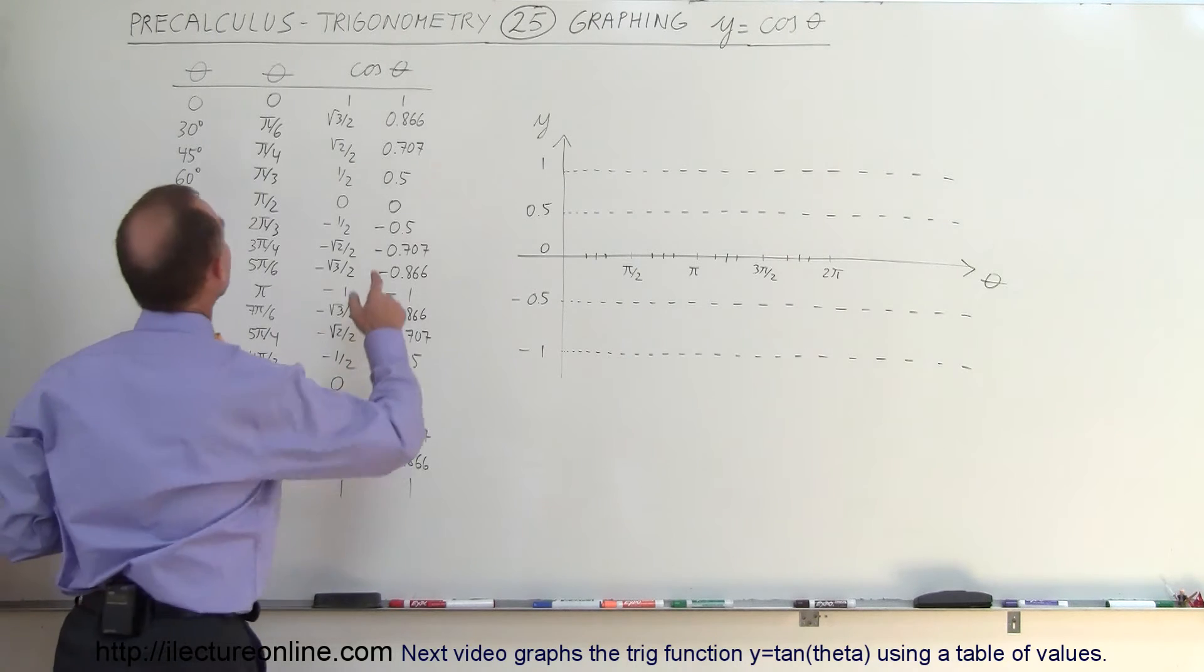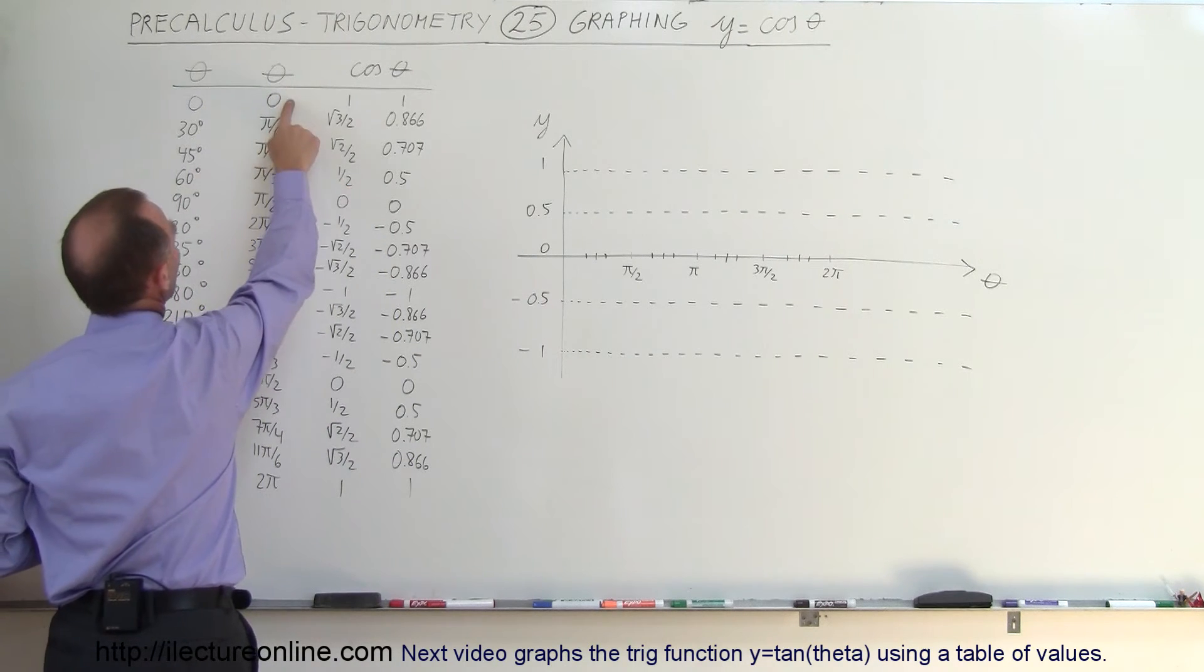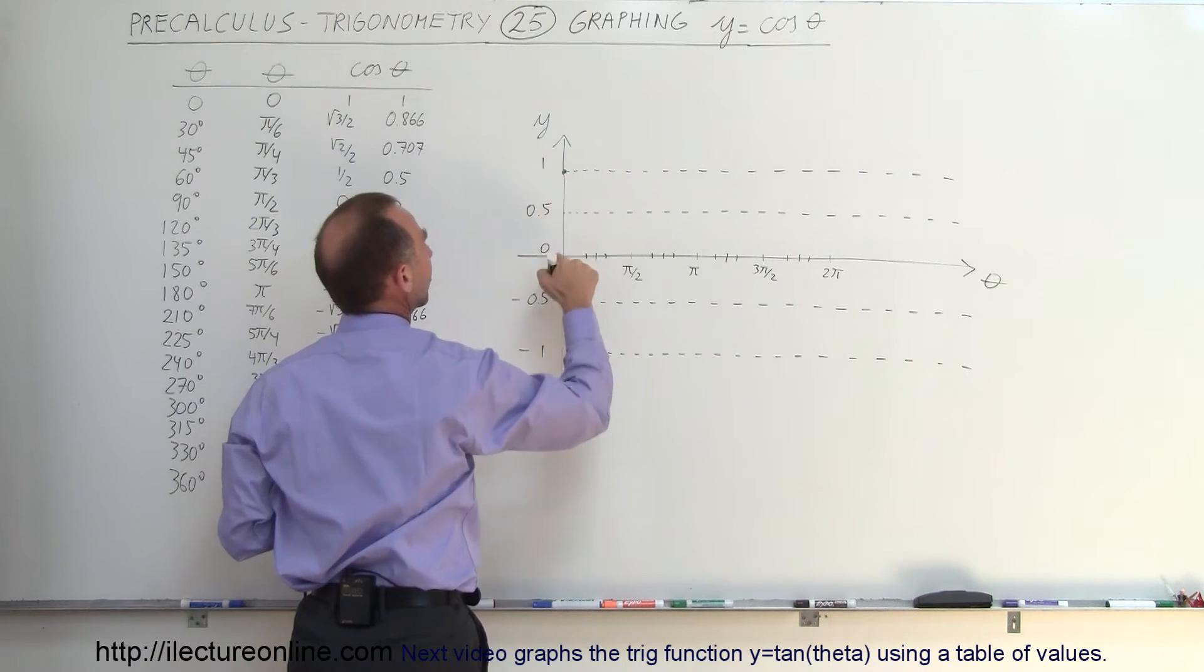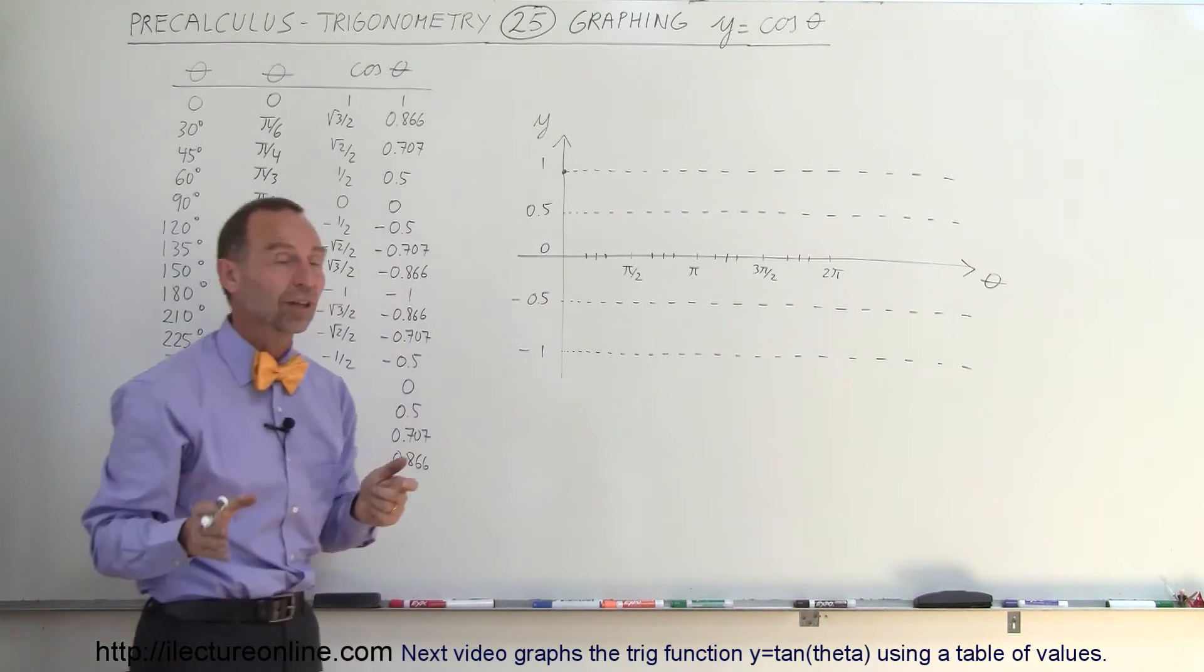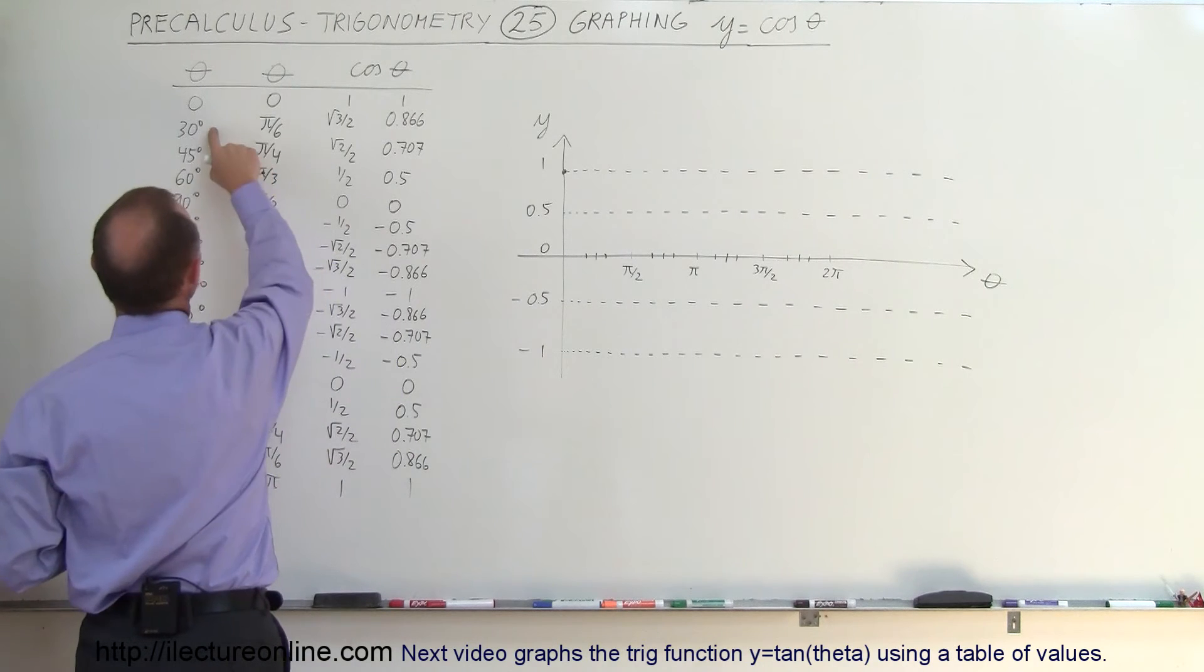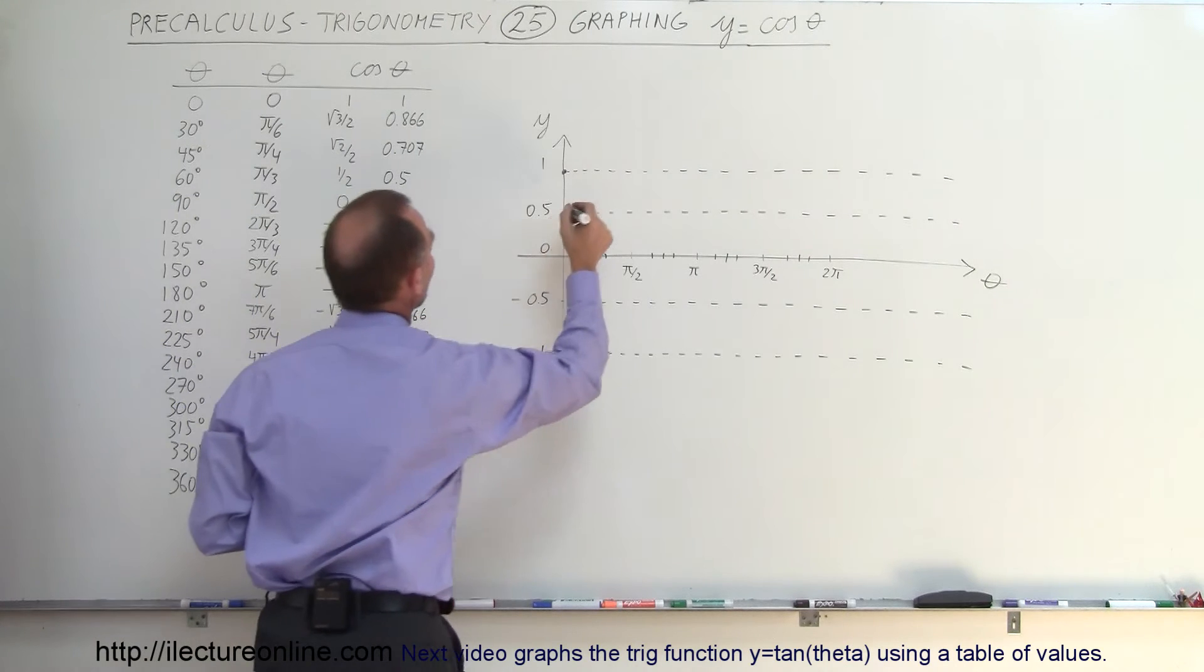So when the angle is 0 degrees or 0 radians, the cosine of the angle is 1. Unlike the sine, which starts at 0 when the angle is 0, the cosine starts at 1 when the angle is 0. Then you realize that as the angle gets bigger, the value in the y direction becomes smaller.